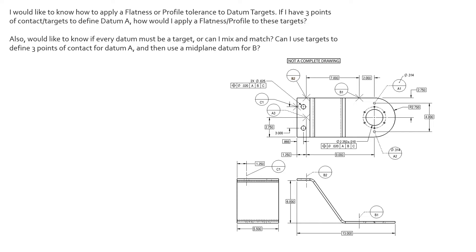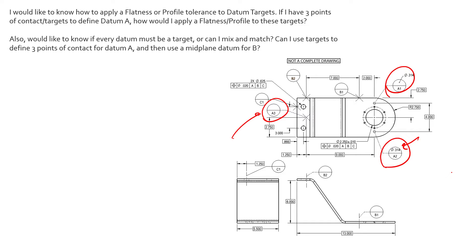The short answer is you're not going to apply flatness or profile to the targets themselves. Here we're identifying A1, A2, and A3. A1 and A2 are datum target areas with a diametric area of 0.314, so the datum simulator would look like the top of a gauge pin with a diameter of 0.314. For A3, the datum simulator looks like the top of a spherical-tipped or conical-tipped pin. All of these datum target simulators are located to each other using basic dimensions, creating a stable datum simulator for datum A.